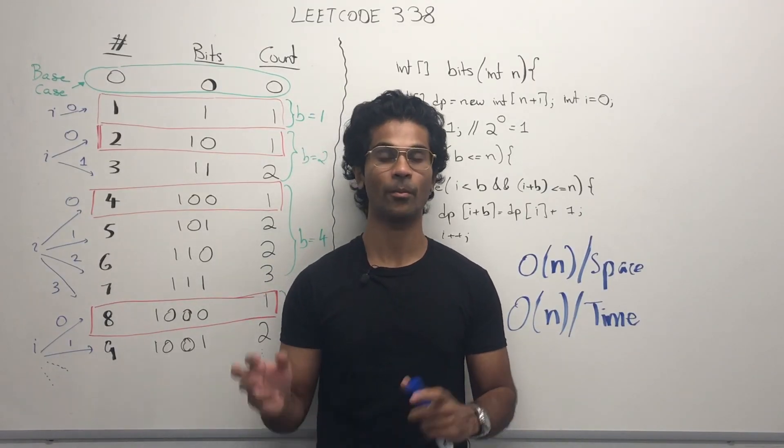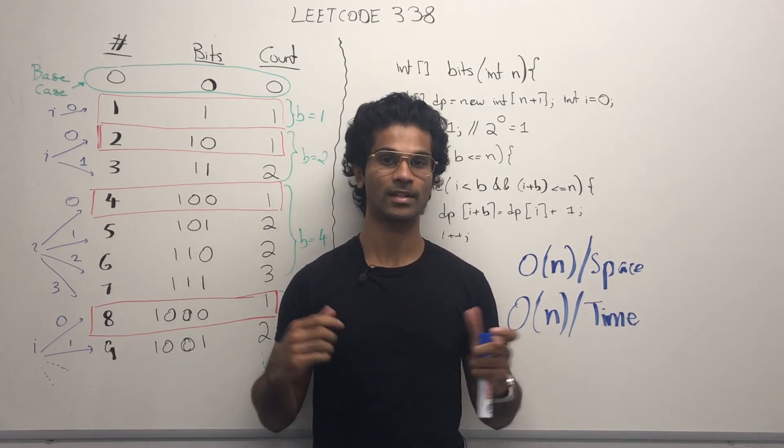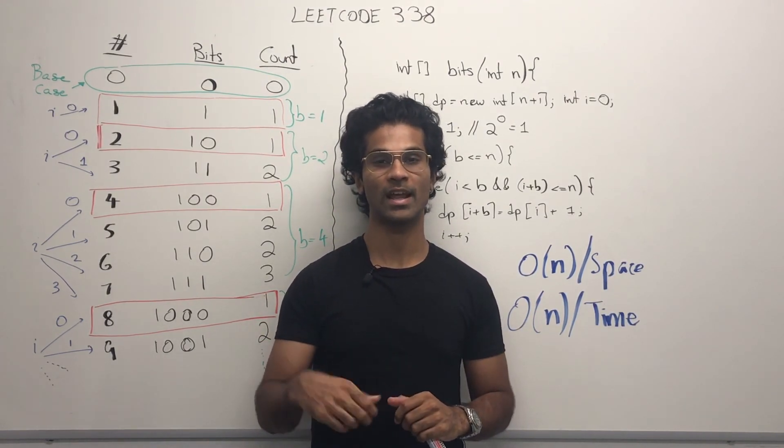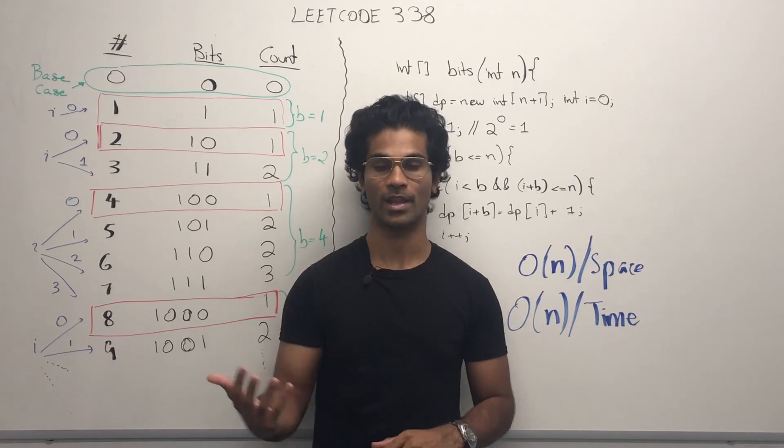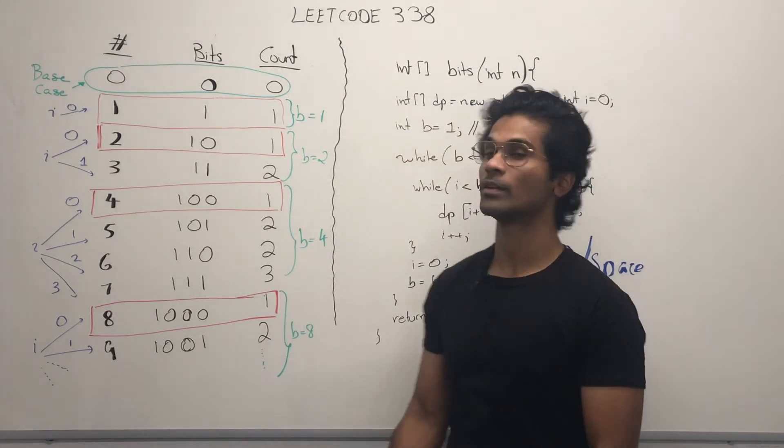The time and space complexity are both O of N because we initialize the DP array of size N, and we're going to visit every single number in that range N.